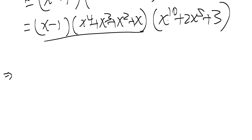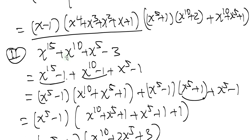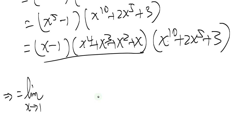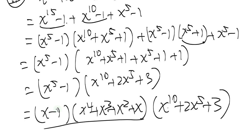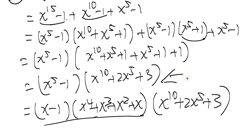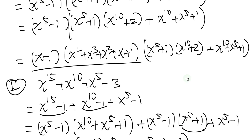So our limit now becomes the limit as x goes to 1 of the numerator divided by the denominator, after canceling the common factor. The remaining numerator is (x to the 5 plus 1) times (x to the 10 plus 2x to the 5 plus 3), and the denominator is (x to the 10 plus 2x to the 5 plus 3).